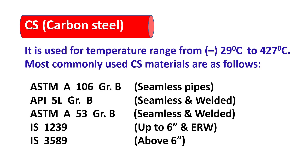ASTM A106 Grade B for seamless pipes. API 5L Grade B for seamless and welded pipes. IS 1239 for up to 6 inch ERW pipe. IS 3589 for above 6 inch.